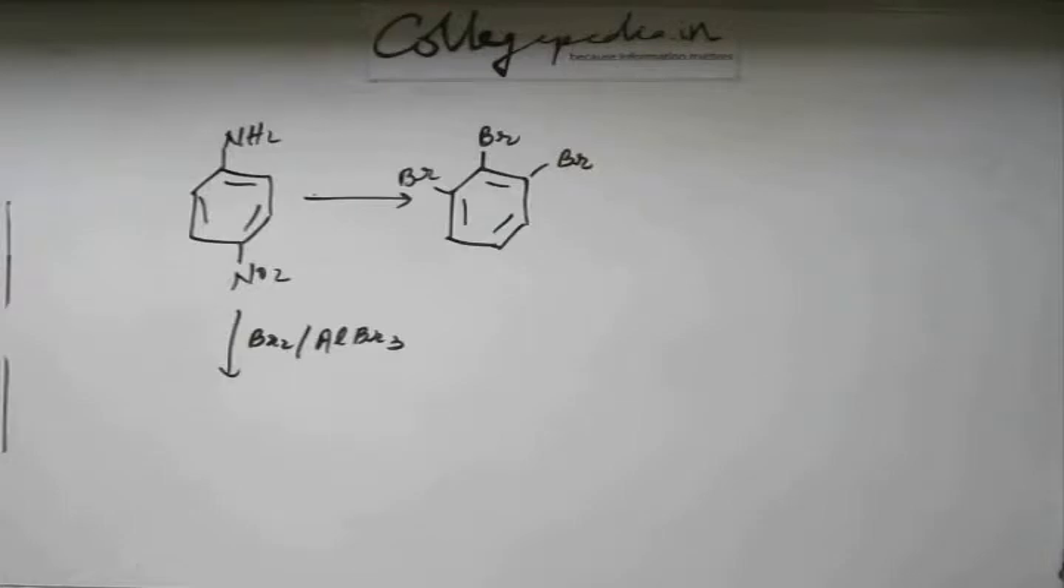The reason for this we saw earlier. I don't feel the need of getting into the reason once again. Now this NH2 group is electron donating. This NO2 group is electron withdrawing. So this NH2 group will dictate the position of a new incoming electrophile. This happens to be ortho-para directing. Its para position is blocked.